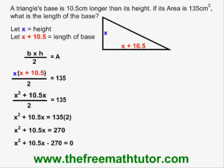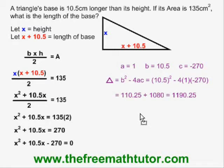I can solve this with the quadratic formula and sometimes by factoring. This time I'm going to use the quadratic formula. I find my a, b, and c, and then I calculate delta. And I get a delta of 1190.25.